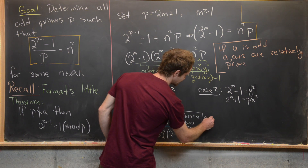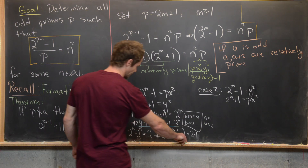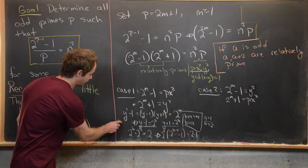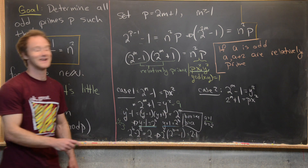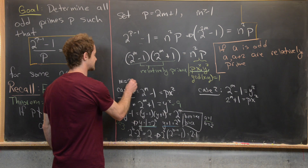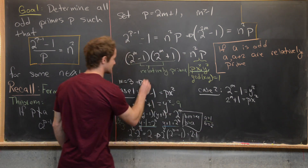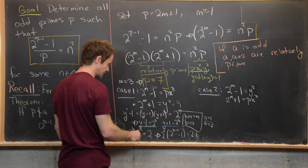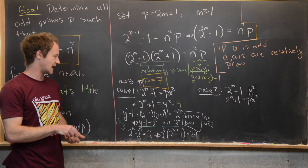So a = 1 and b = 2. With a = 1, we get y = 3, so y² = 9, meaning 2^m = 8, giving m = 3. Finally, m = 3 gives p = 2(3) + 1 = 7. So our first solution is p = 7, coming from Case 1.